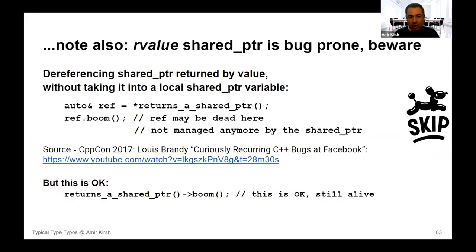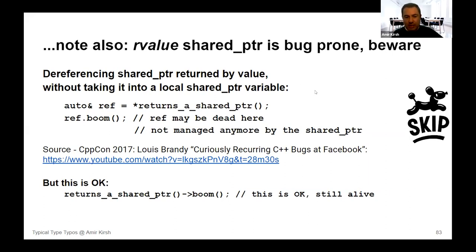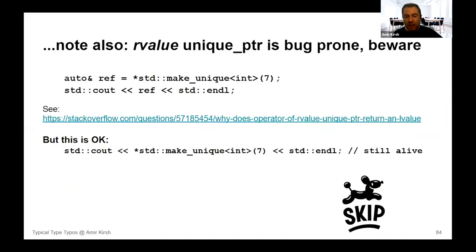Passing rvalue shared_ptr is also bug-prone and relates to the same issue of dangling references from temporaries or unique_ptr/shared_ptr being dead. This is covered in Louis Brandy's lecture — go watch it.